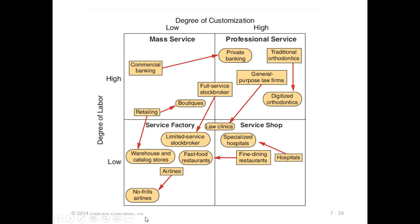For low customization and low labor — the service factory category — we can introduce a lot of automation systems. The airline industry has introduced technology-based things: bags are scanned automatically, e-tickets, and self check-in and check-out. In fast food restaurants like McDonald's or KFC, self-service systems with more automation have been introduced — tablets where you choose your product, order by yourself, and they deliver it to you.